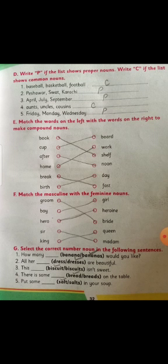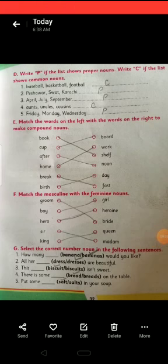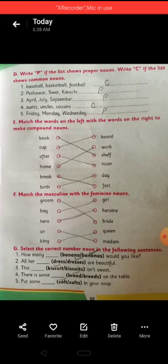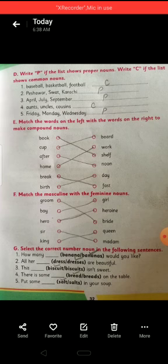Exercise E: match the words on the left with the words on the right to make compound nouns. We have done matching exercises before. The first one: 'book' matches with 'shelf' — bookshelf. 'Cup' matches with 'board' — cupboard, meaning a wardrobe. 'After' matches with 'noon' — afternoon. 'Home' matches with 'work' — homework. 'Birth' matches with 'day' — birthday. 'Break' matches with 'fast' — breakfast, meaning morning meal.